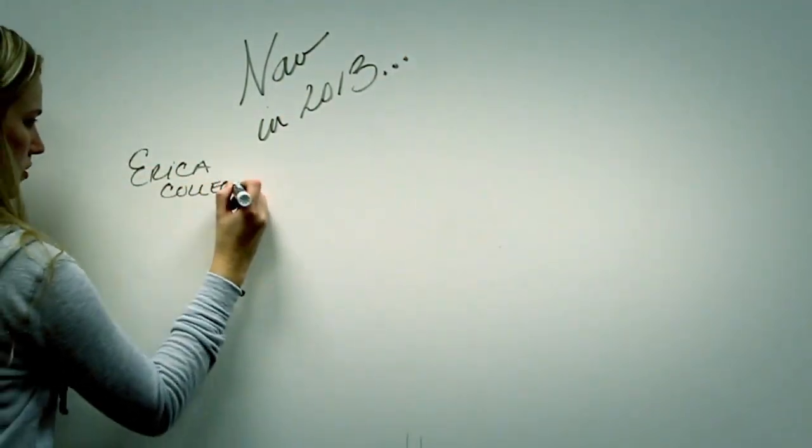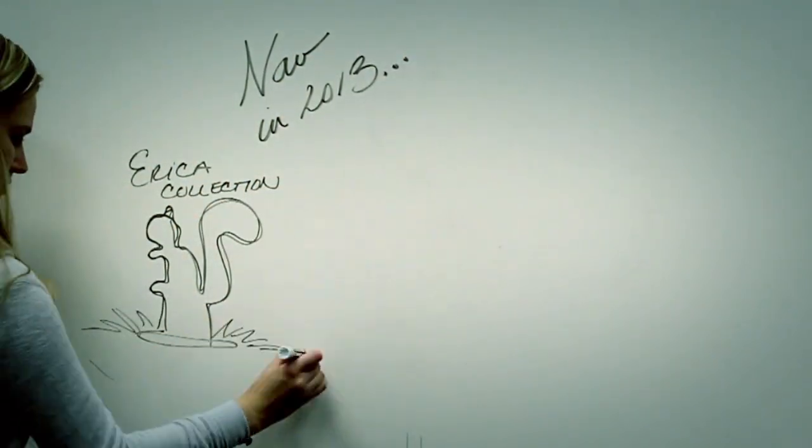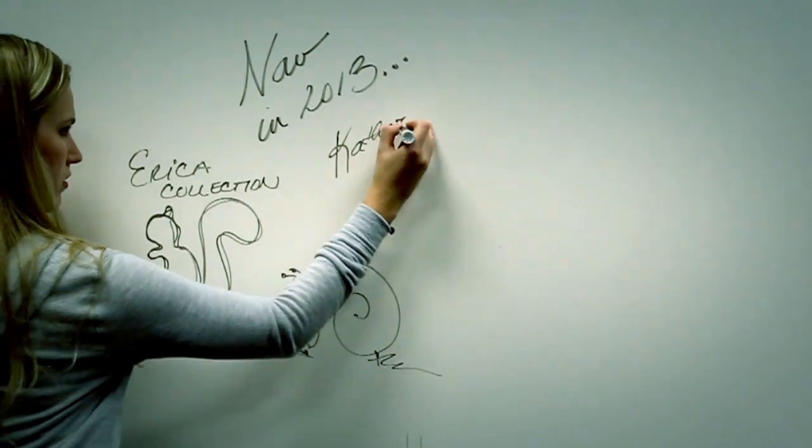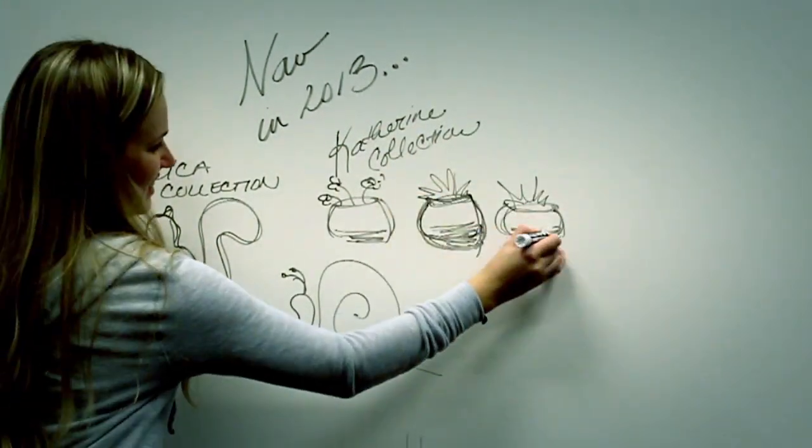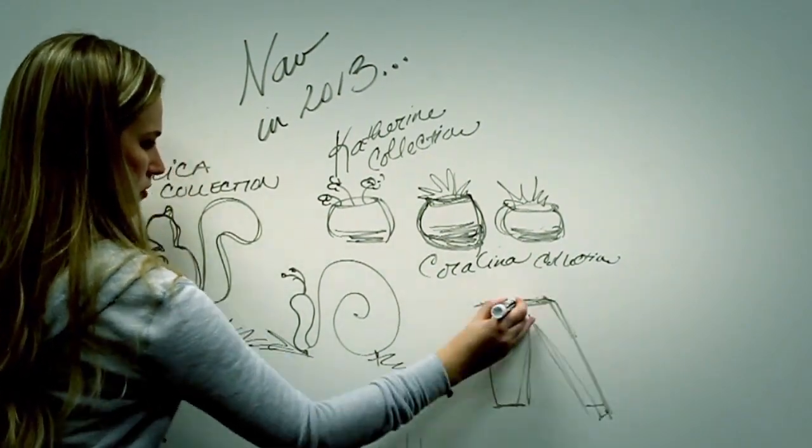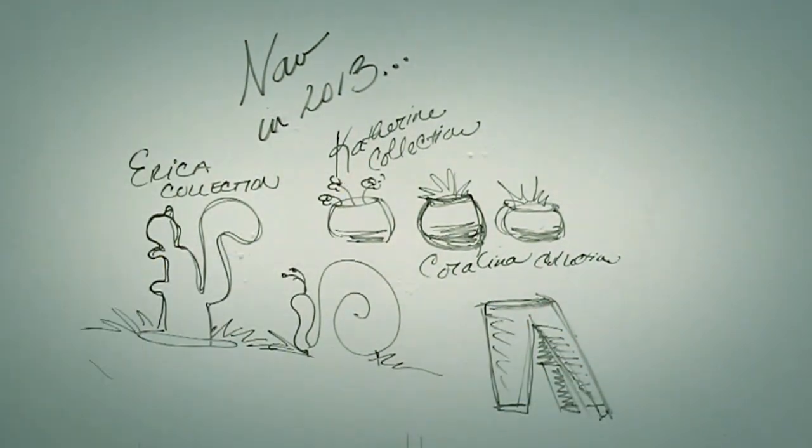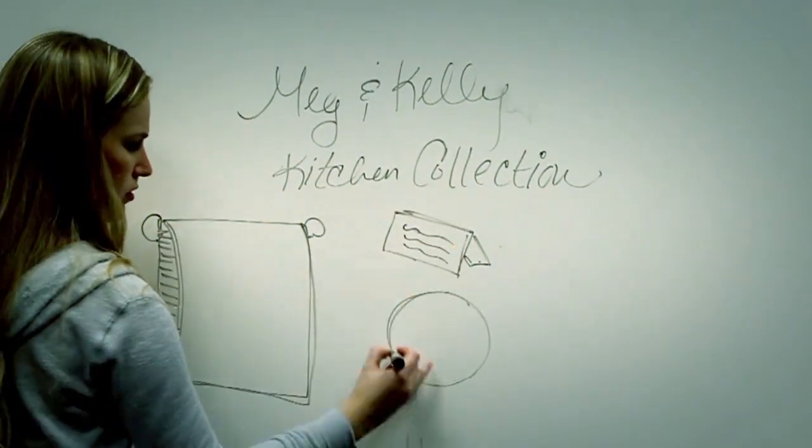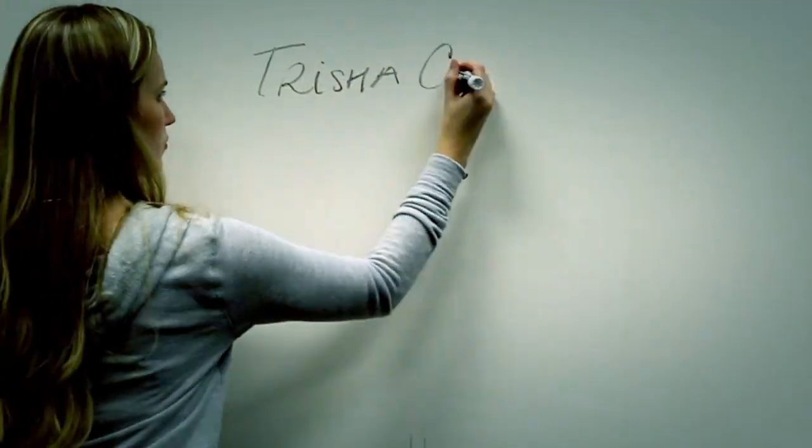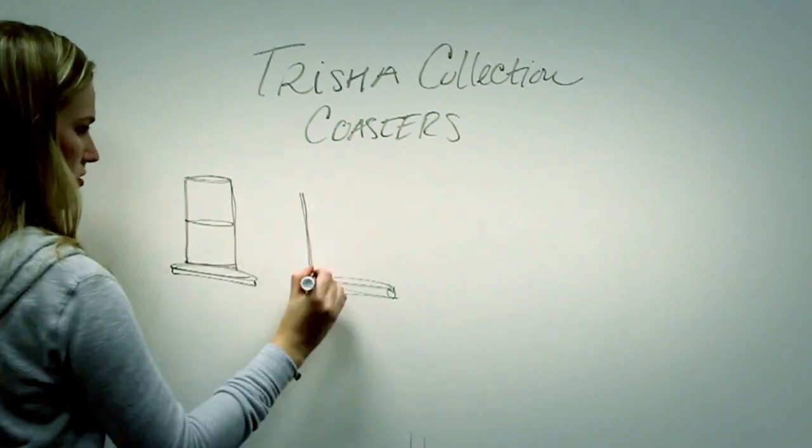Now, in 2013, we have several exciting new products including the Erica Collection Garden Critters, the Catherine Collection Planter Set, and the Carolina Collection Table. We also have the Meg & Kelly Collection Kitchen Accessories, and lastly, the Trisha Collection Coaster Set.